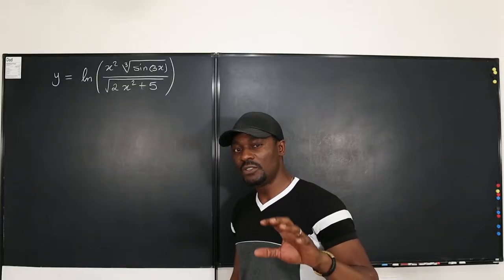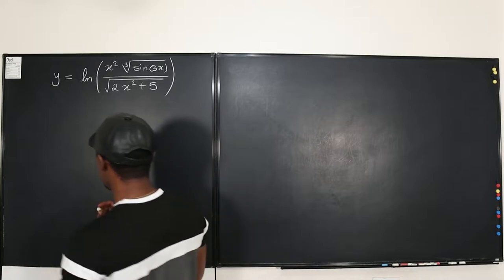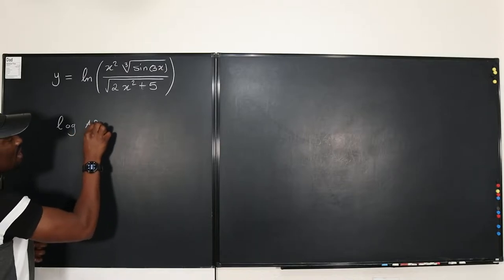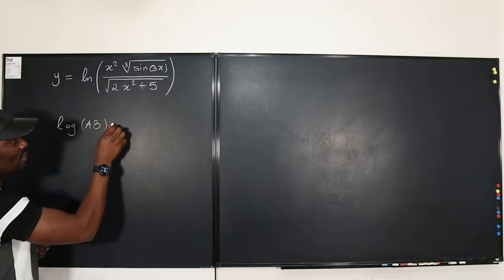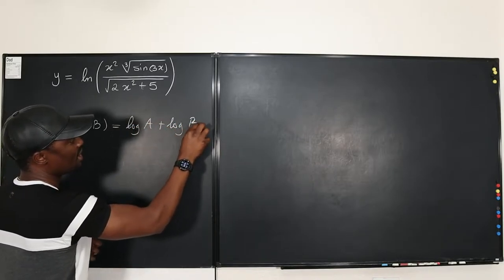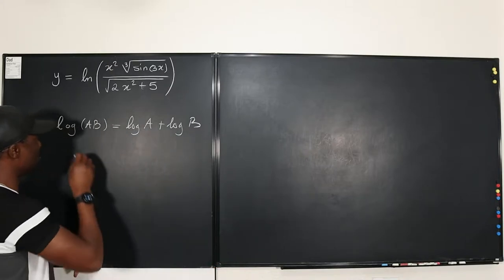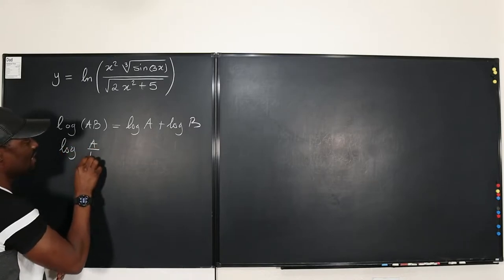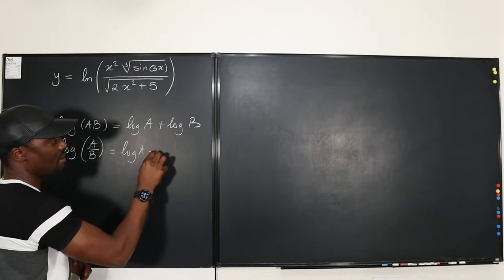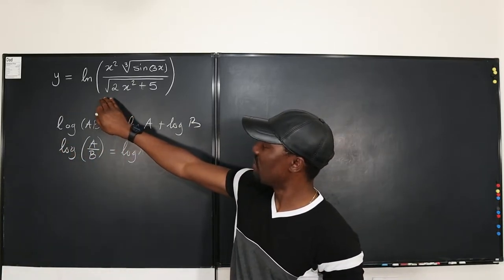The first thing to know is that the laws of logarithms will apply here. We know that the logarithm of a times b can be rewritten as the logarithm of a plus the logarithm of b, no matter what the base is. And secondly, the logarithm of a divided by b can be written as the logarithm of a minus the logarithm of b. This is all we need to simplify this problem.